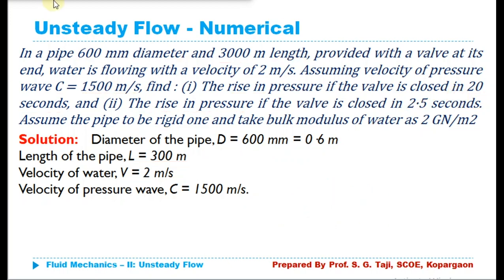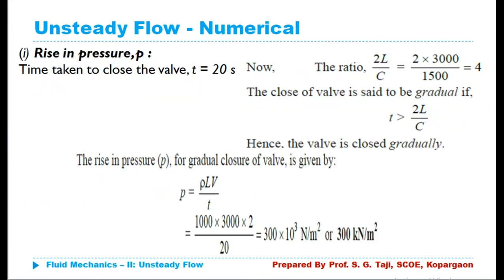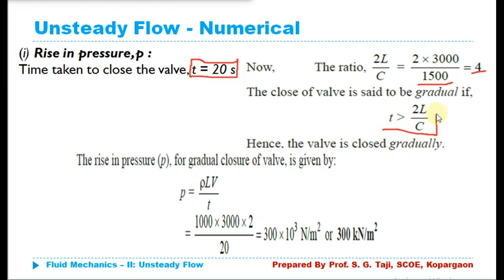First, calculate 2L/C: 2 multiplied by 300 divided by 1500 gives 0.4 seconds. Wait — that is 2 × 300 / 1500 = 0.4. For the first case where T = 20 seconds, T is greater than the value of 2L/C, which means the valve has been closed gradually.